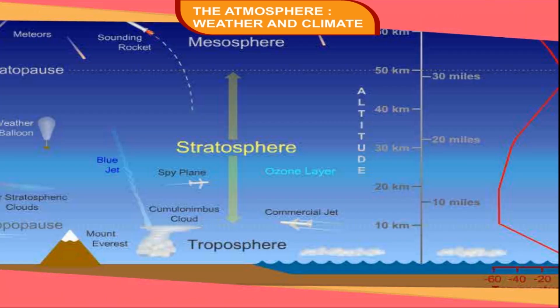Stratosphere. It lies above the troposphere and extends to about 50 km above the earth's surface. There is a gradual increase of temperature in this layer. This is the layer in which air travel is safest because there are no bumpy pockets of air; therefore, aircraft usually fly in this sphere. It also has a band of ozone gas which protects us from the sun's ultraviolet rays. It is called the ozonosphere, which is quite warm due to absorption of these rays.